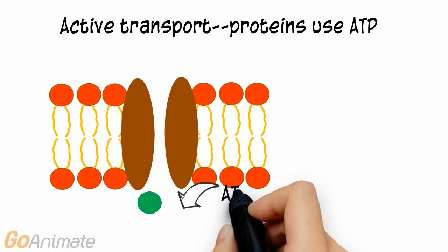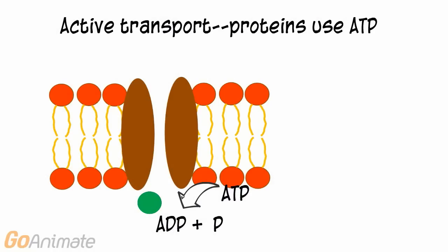Substances can move against their gradients using active transport proteins. These proteins use ATP for energy.